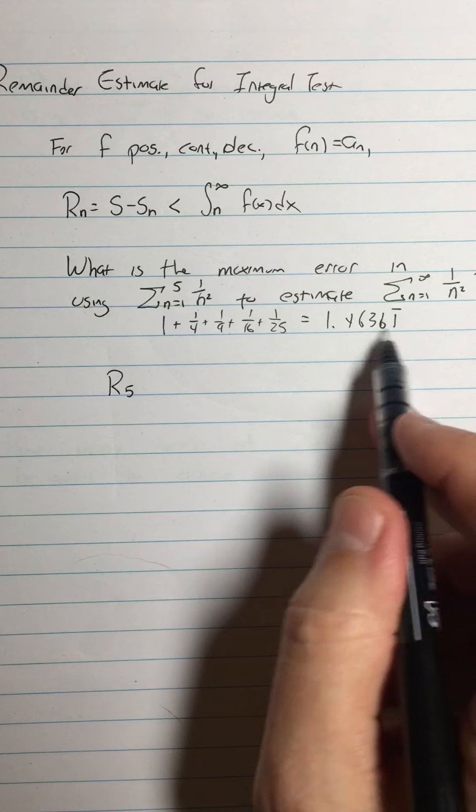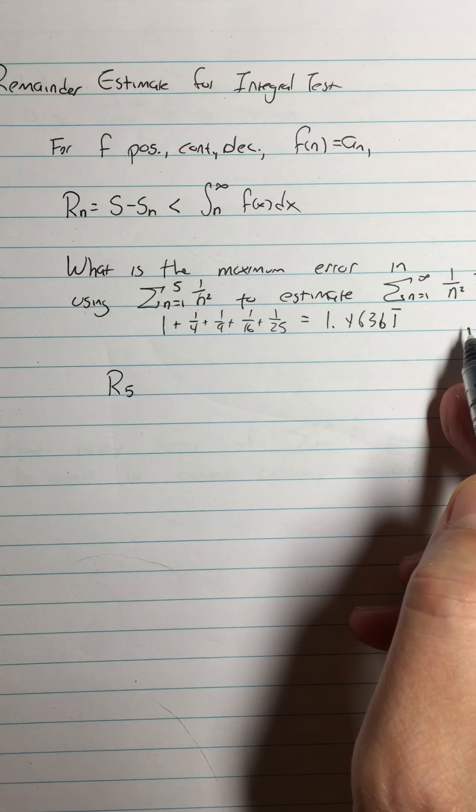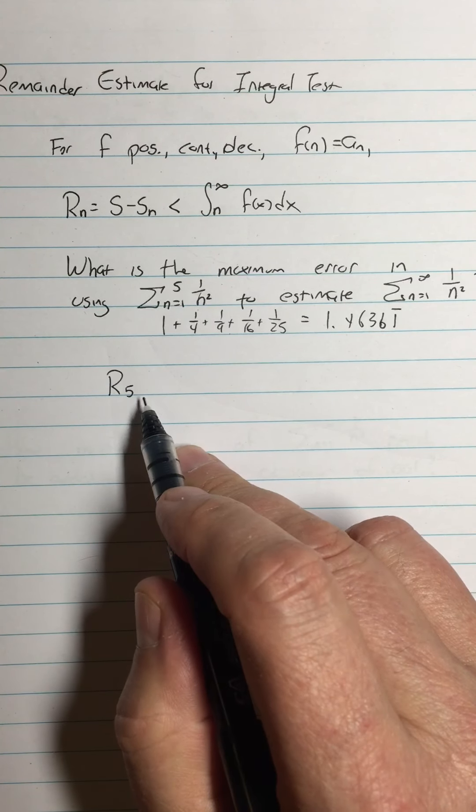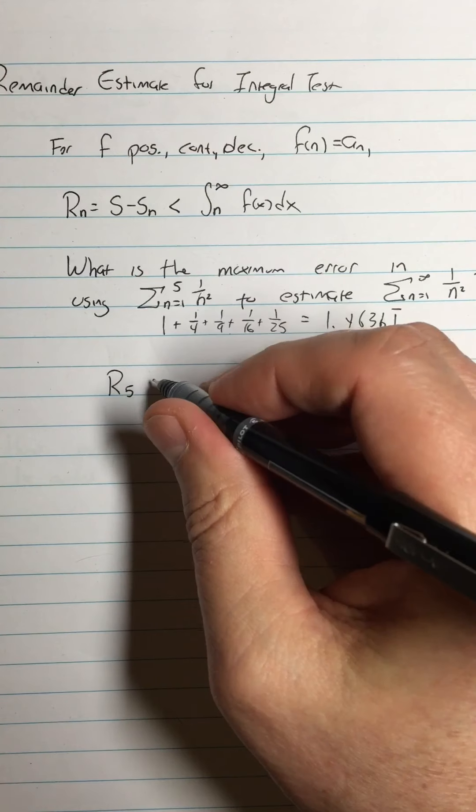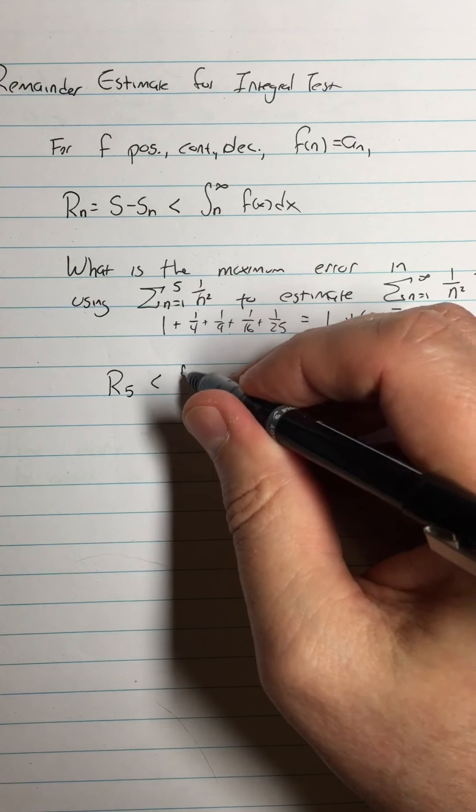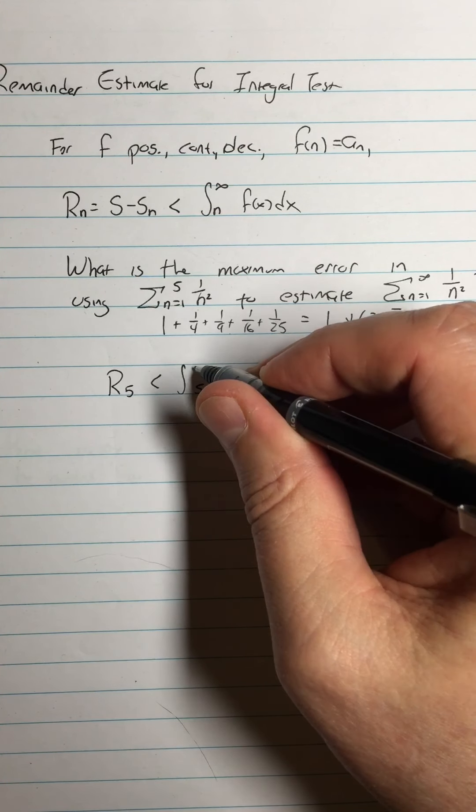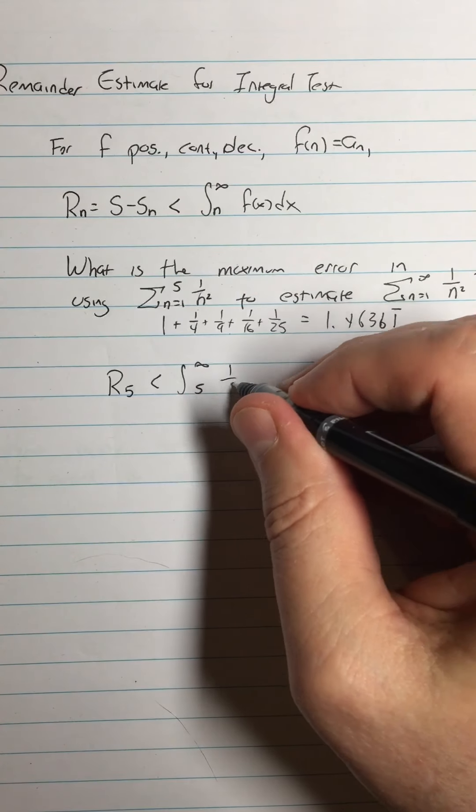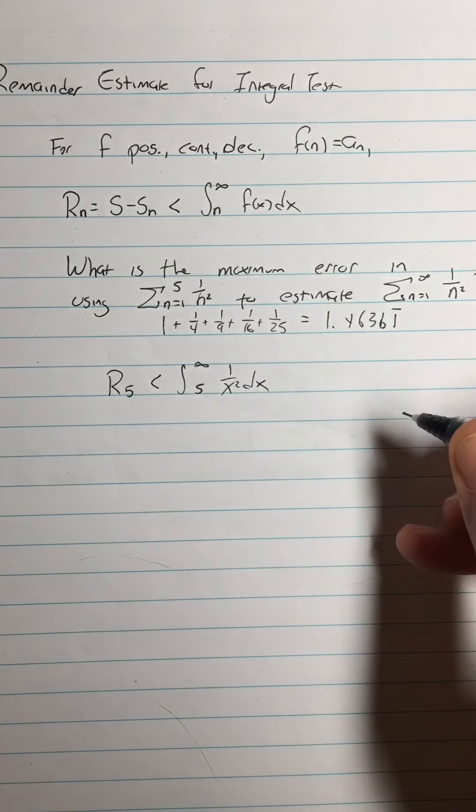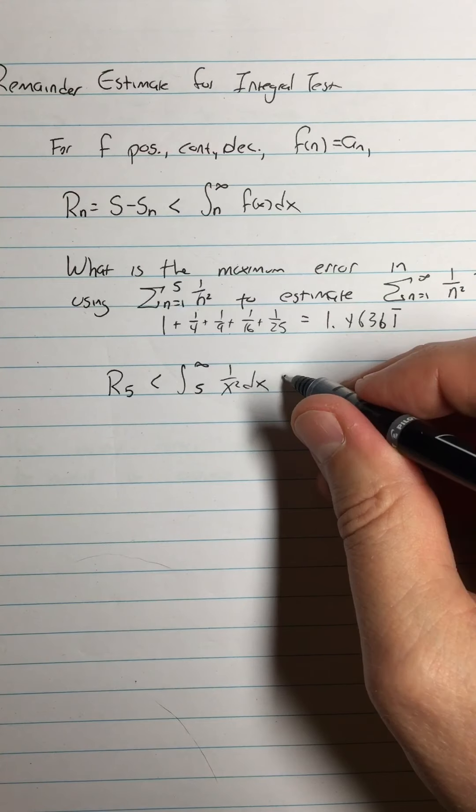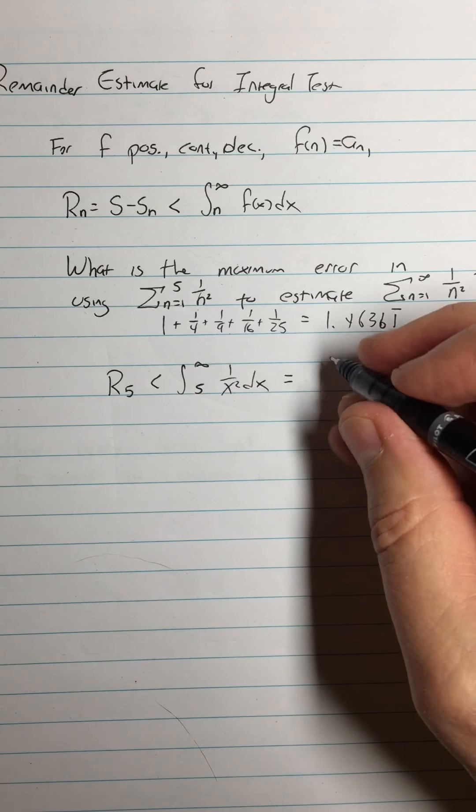So we can say R sub 5 - that means how far are we from getting to the infinite sum when we stop it with 5 terms - is less than the integral from 5 to infinity of 1 over x squared dx. And this is one of the reasons that I've learned to do improper integrals, so I can figure out what that is.